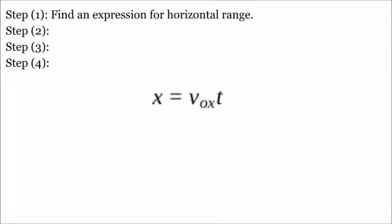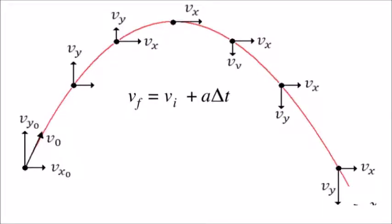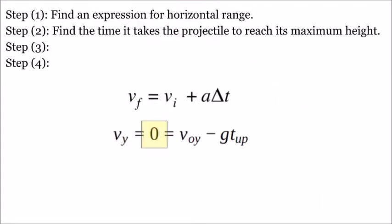Step 1. Find an expression for horizontal range. Done. Constant velocity. Step 2. Find the time it takes the projectile to reach its maximum height. A kinematic equation. A constant acceleration. And, at the maximum height, the final velocity is 0. Great. The time it takes to reach the maximum height.